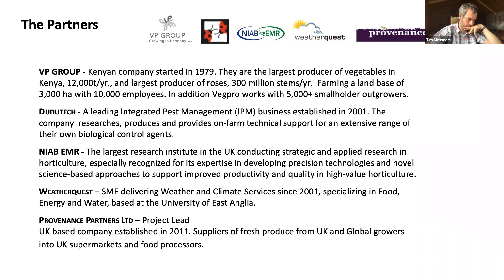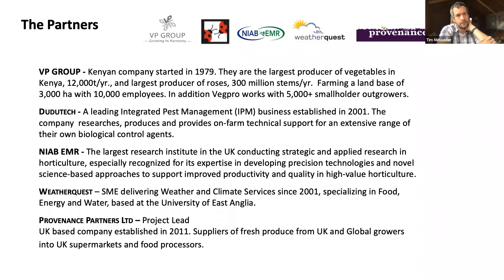The consortium comprises five partners: VP Group (Vegpro), a large Kenyan producer of vegetables and roses with 3,000 hectares, 10,000 employees, and critically over 5,000 smallholder outgrowers in their supply chain — important for our ODA requirements. Dudu Tech, a leading IPM company in Kenya researching and producing biological control agents. EMRI, a very large research institute conducting strategic and applied research in horticulture. Weatherquest, an SME delivering weather and climate services with a focus on agriculture. And the project lead, Providence Partners, based in London, a major supplier of fresh produce from British and international growers into UK supermarkets.